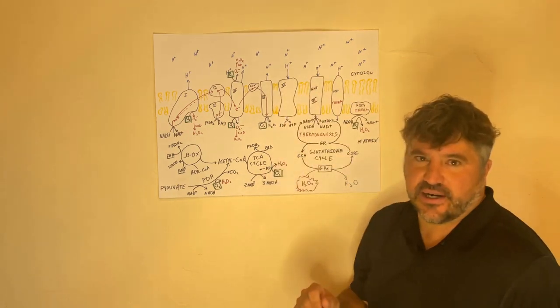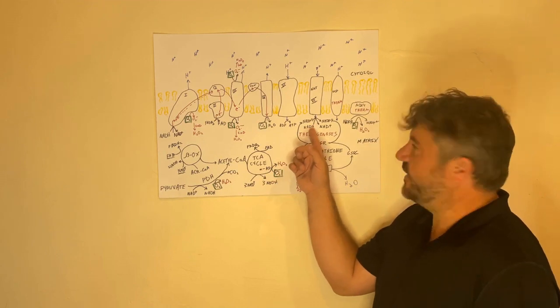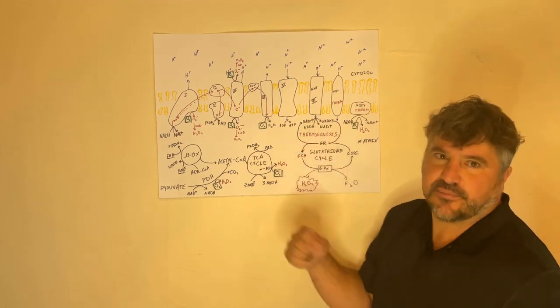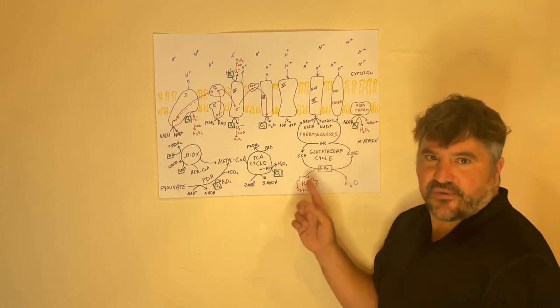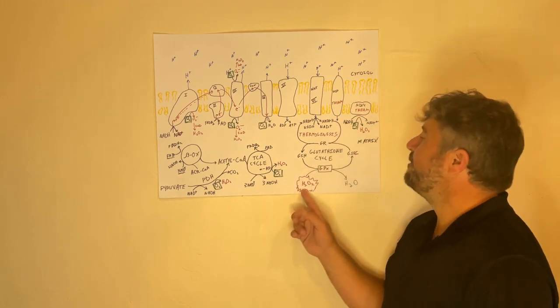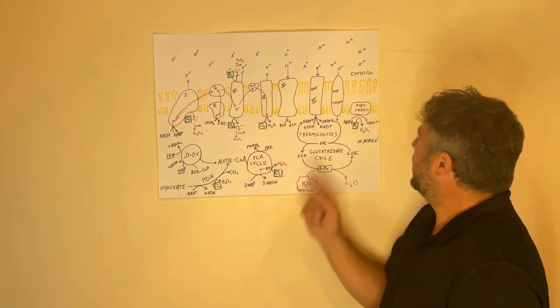Then NNT, which I call complex six, takes those electrons from NADH and transfers them to something called NADPH. NADPH is used in antioxidant defense. It takes hydrogen peroxide and makes it water, makes it harmless.